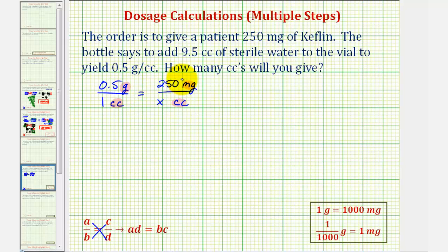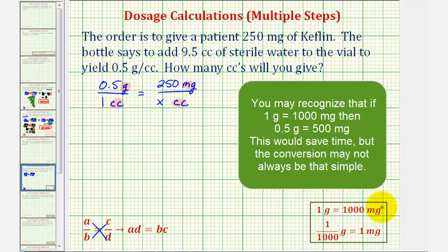To perform this conversion, we'll set up a different proportion. Let's convert grams to milligrams using our conversion: one gram equals 1,000 milligrams. Our proportion will be 0.5 grams is to an unknown number of milligrams - we'll call it y milligrams - must equal one gram to 1,000 milligrams.